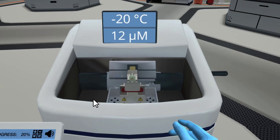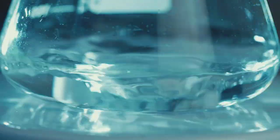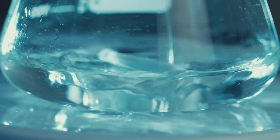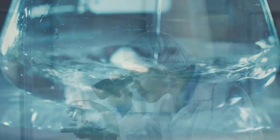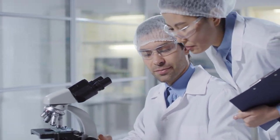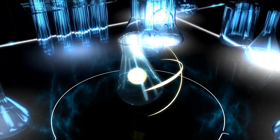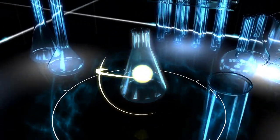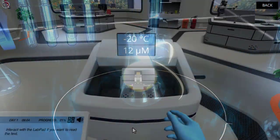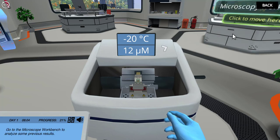We now need to use a pre-incubation solution. The 9.4-pH ATP solution will have to incubate for 15 minutes before the sample is ready to dye. During this time, let's practice how to analyze the different histochemistry assays. Go to the microscope workbench to analyze some previous results.